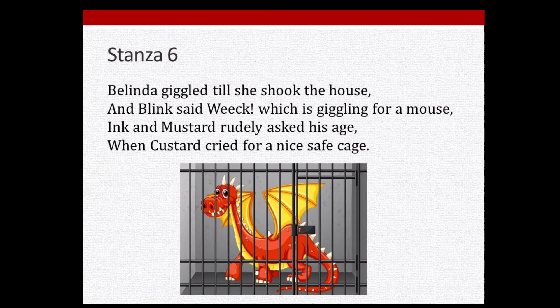Belinda giggled till she shook the house, and Blink said 'week,' which is giggling for a mouse. Ink and Mustard rudely asked his age when Custard cried for a nice safe cage. Belinda giggled so much she shook the house. Blink made a squeaking sound — which is how a mouse laughs. Ink and Mustard asked his age rudely, implying 'are you a little child?' whenever Custard cried for a safe cage.